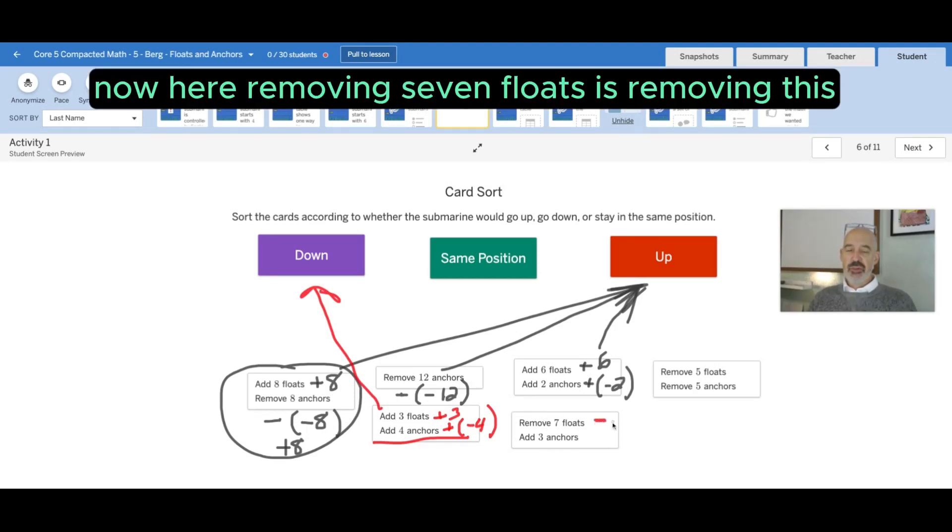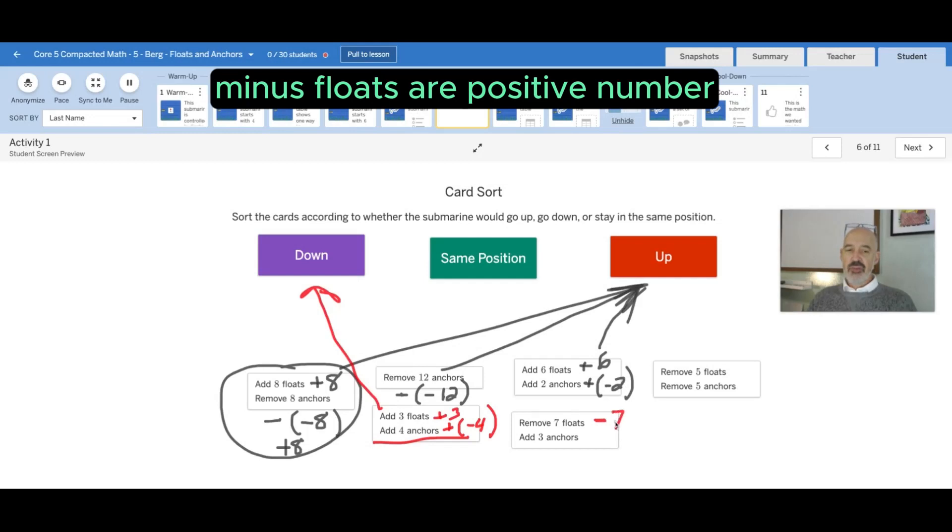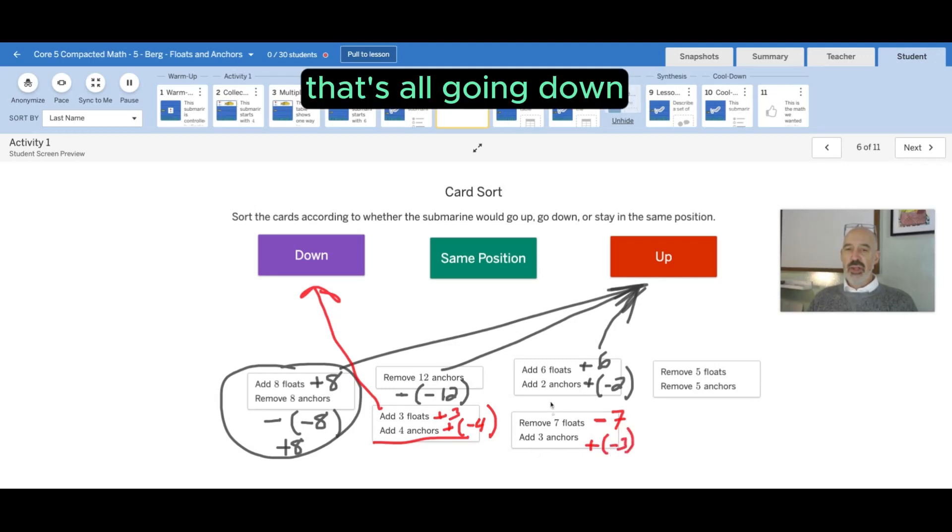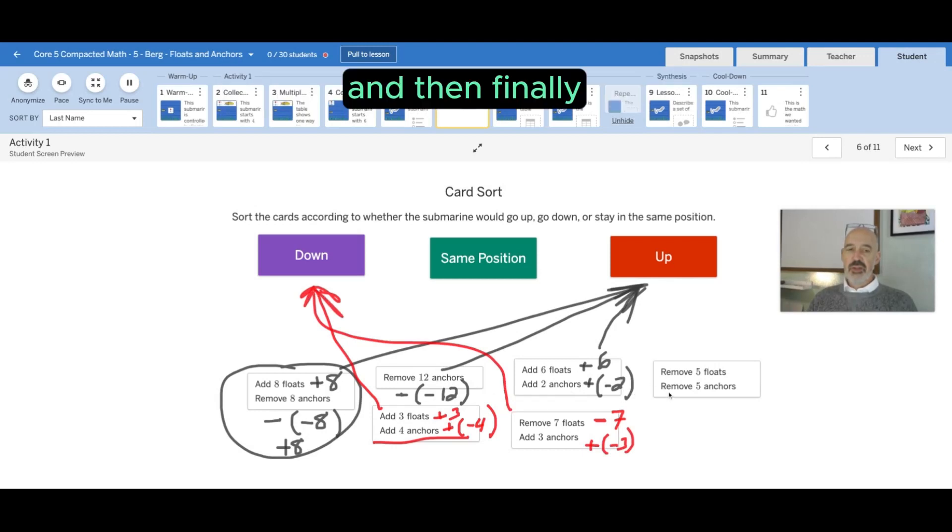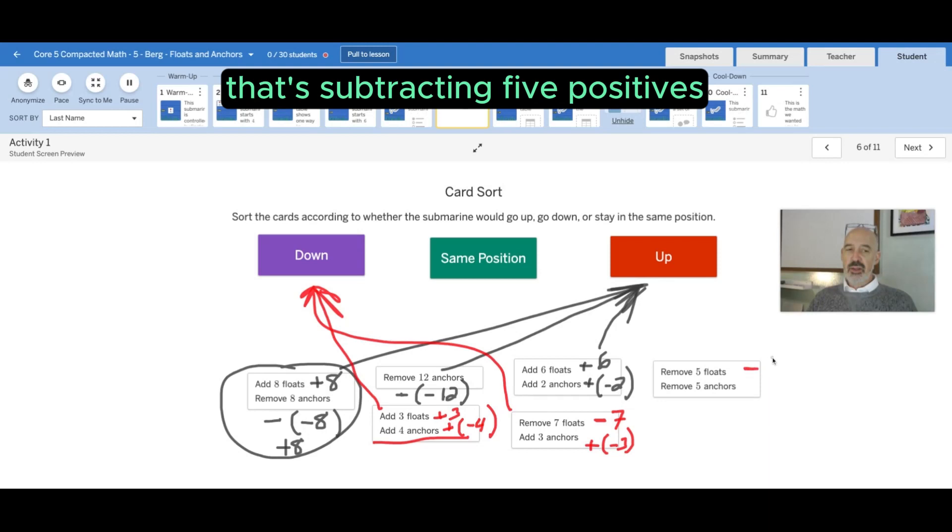Now here, removing seven floats is removing, minus floats are positive numbers, so it's minus seven. And then adding three anchors, that's adding three negatives. That's all going down, so this obviously goes to down.